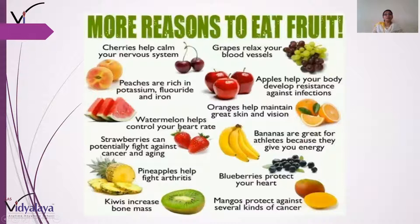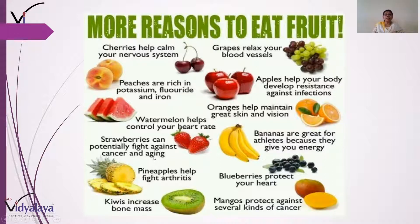Ab dekhiye more reasons to eat fruit — aur kya anokhe reasons hain jiski wajah se hume phal khane chahiye. Cherries help calm your nervous system — yaani cherries se aapka nervous system calm hota hai. Peaches are rich in potassium, fluoride, and iron. Watermelon helps control your heart rate — heart rate ko control karta hai. Strawberries can potentially fight against cancer and aging — agar aap strawberries khate ho toh cancer se fight kar sakte ho aur aging ke effects bhi nahi honge. Pineapple helps fight arthritis — isse arthritis mein rahat milti hai.